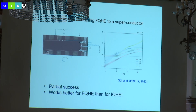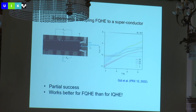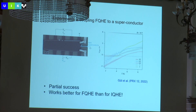The idea of parafermions: start from counter-propagating fractional quantum Hall edges and gap them either by backscattering or by superconductivity. Gapping by backscattering is easy — just bring the edges close together. Gapping by superconductivity is much harder because superconductivity and magnetic fields don't like each other, and the FQHE requires a very strong magnetic field.